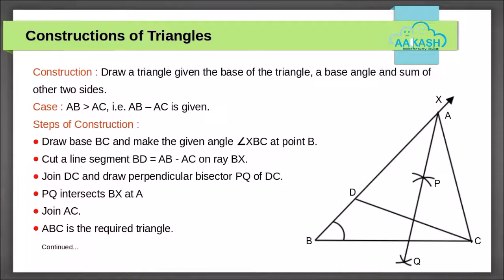In the second construction, draw a triangle whose base, a base angle, and the difference of the other two sides is given. In this case, assume that AB is greater than AC, that is AB minus AC is given.